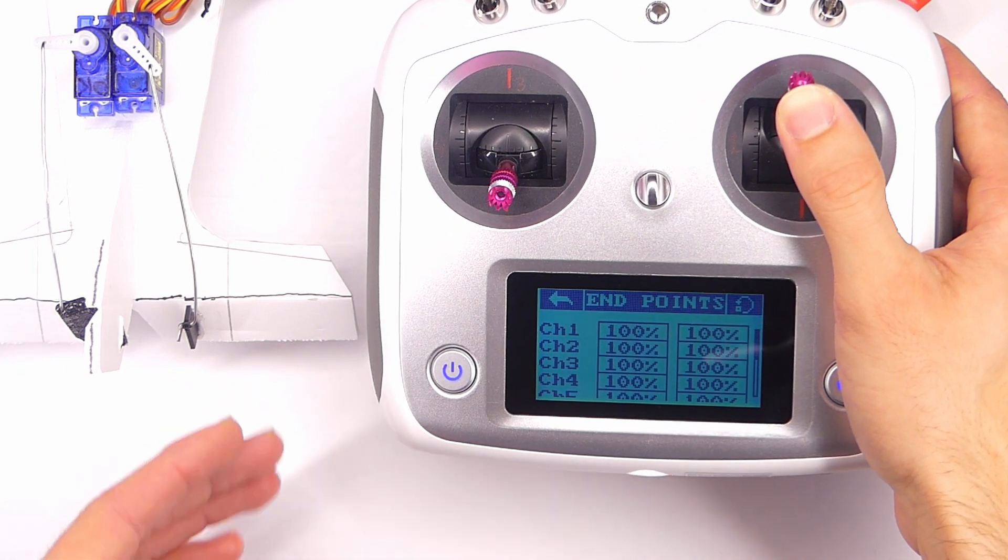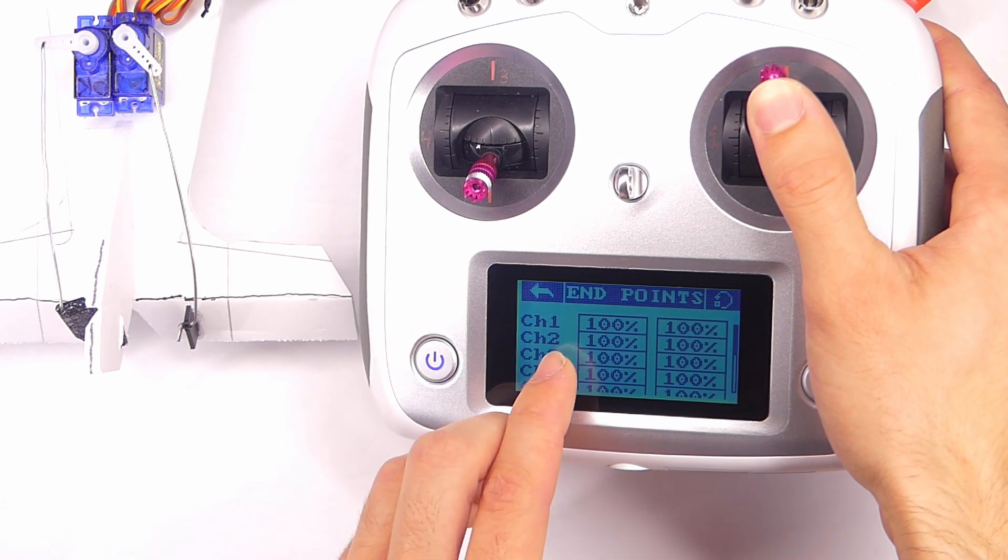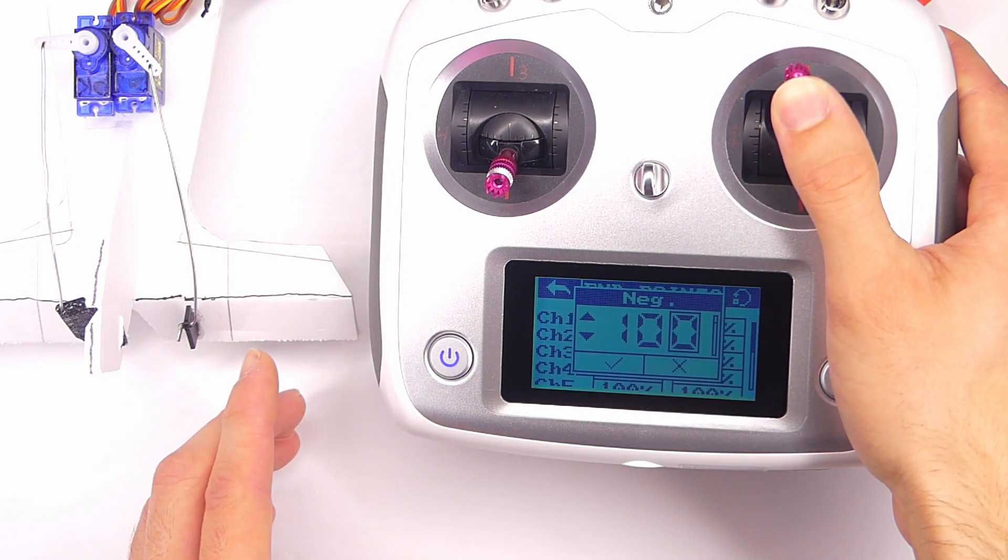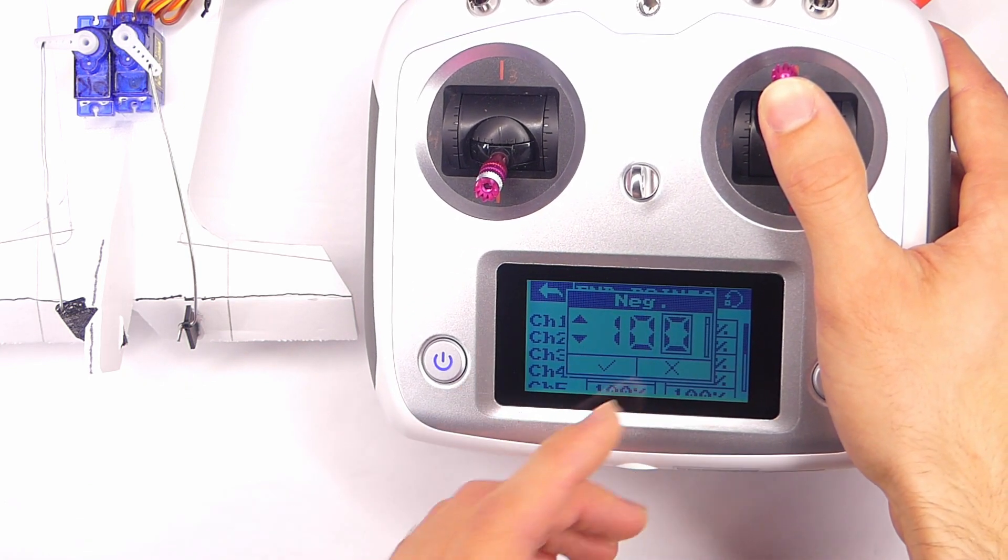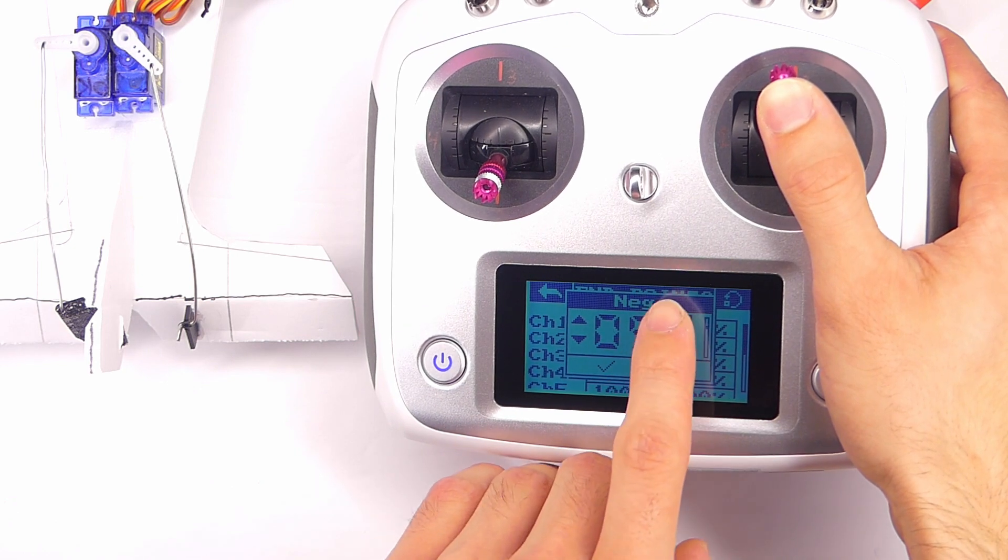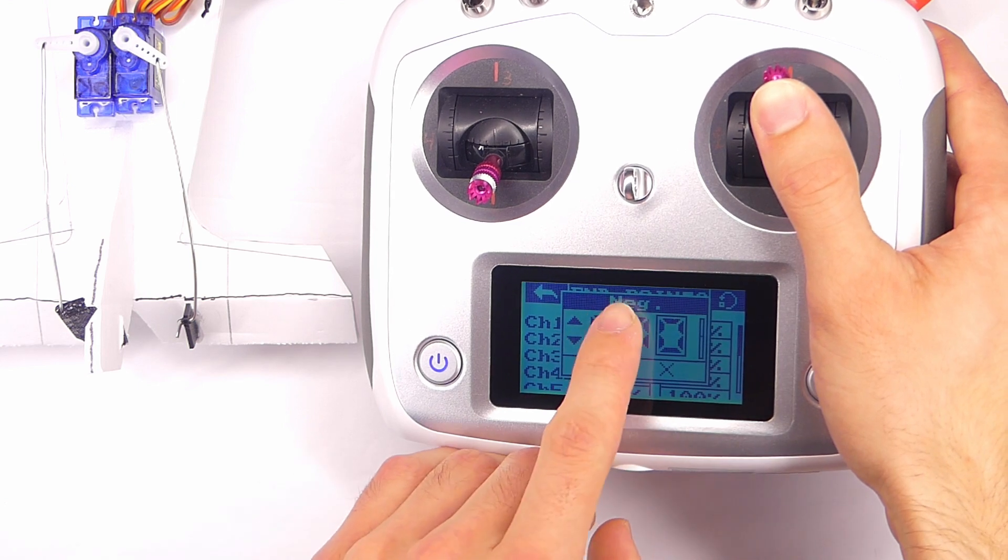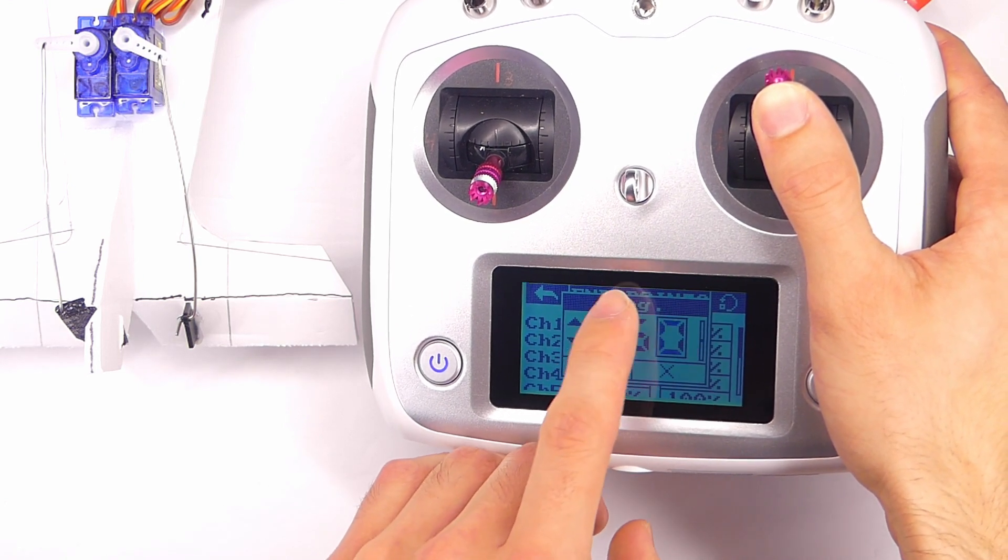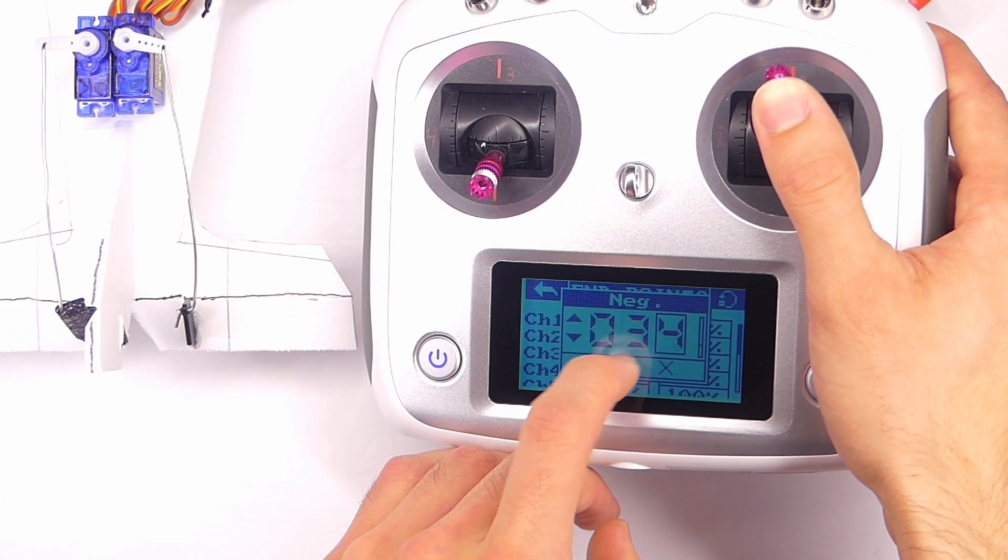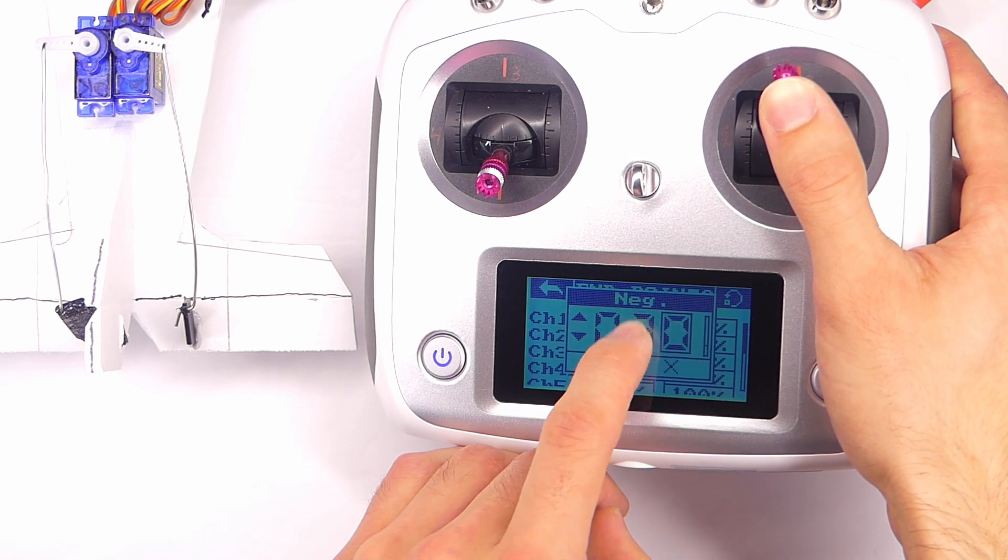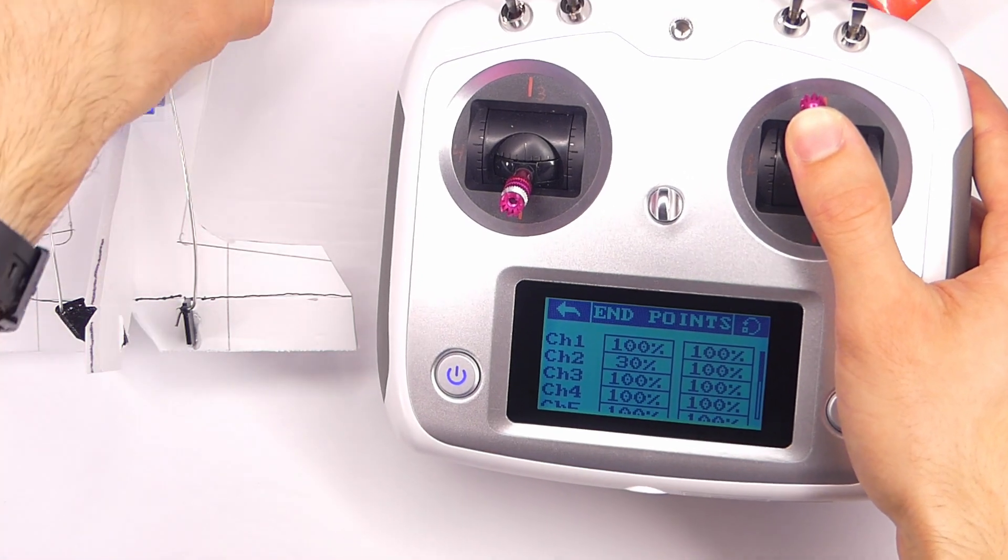So then I can decide what I want my maximum deflection to be. So in this case, we're going to click on channel two and we're going to click on the negative amount and we're actually going to decrease this. So we're basically going to limit the amount that the servo moves in that direction. So I'm just swiping down on the numbers to decrease them. I'm not sure if you can quite tell, but the servo is moving quite a bit. So let's make it, let's say it's like 30%. Press okay, or press the check mark.